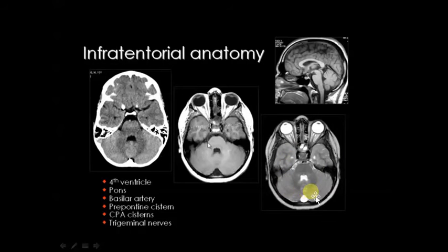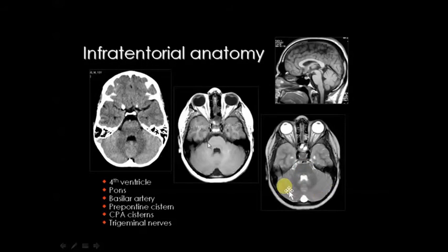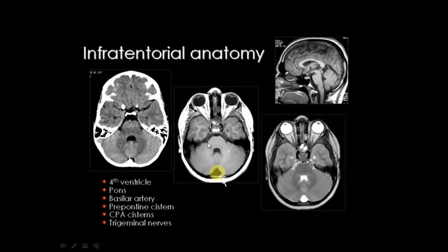On the T2 MRI you can see the same structures. Here is the fourth ventricle; in front of the fourth ventricle is the pons; on either side is the right and left cerebellum. Behind the cerebellum is a cistern called the intercerebellar cistern or cisterna magna — this is another large cistern.